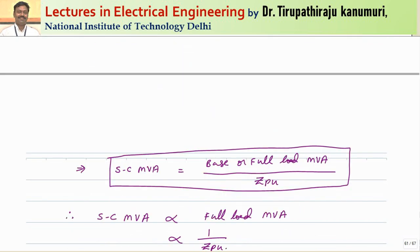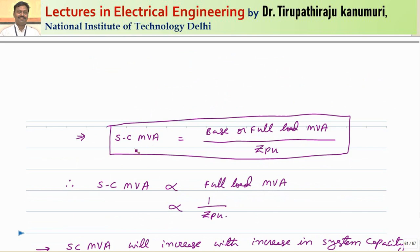Short circuit volt-amperes — or short circuit MVA in practical terms — equals base or full load MVA divided by Z per unit. From this, we can tell that short circuit MVA is directly proportional to the full load MVA, or the rated capacity of the system.